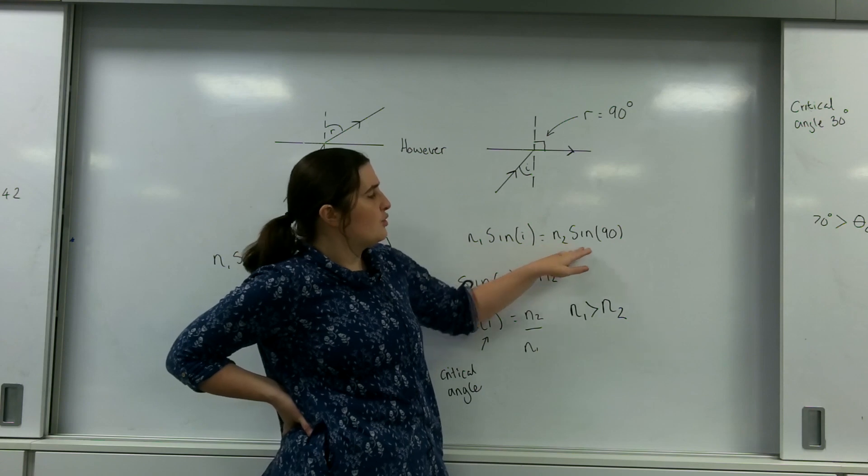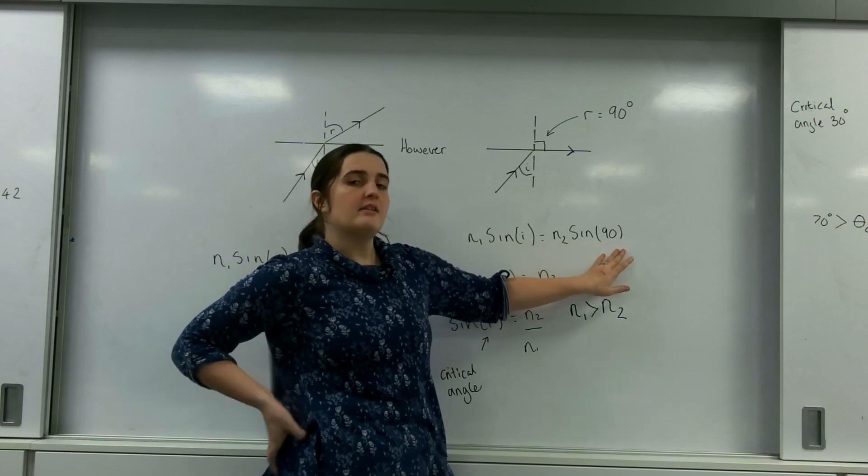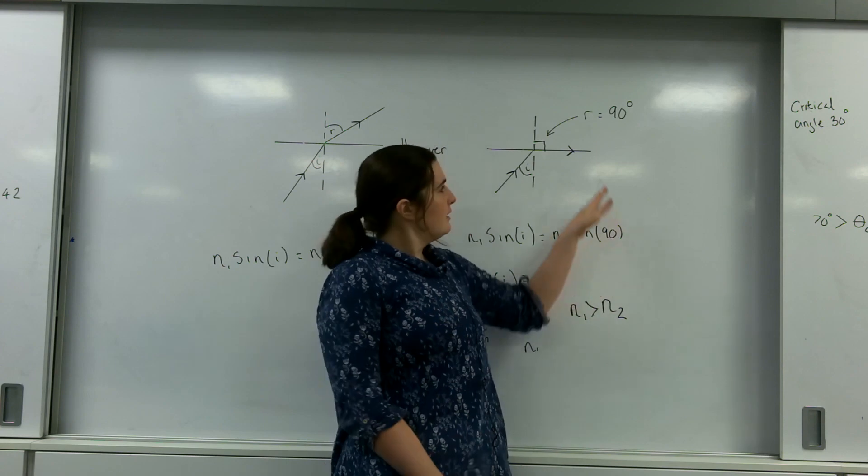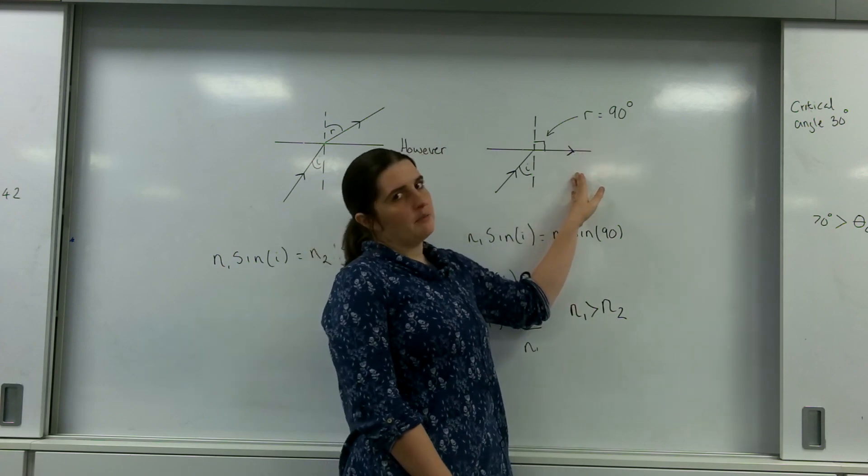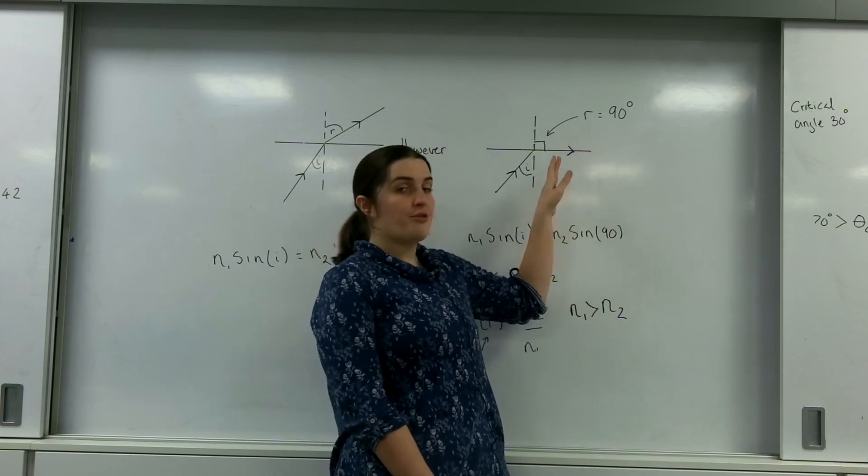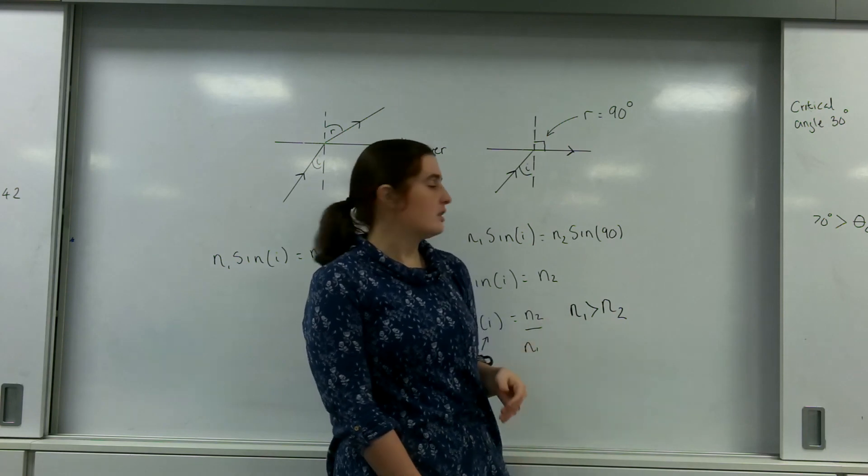And this is the kind of relationship we're talking about here. So the N1 sine I equals N2 sine 90, and this is the special point, this is the teetering point. Anything bigger than 90 degrees, and it's back in the material. So we're finding this threshold, this critical angle.